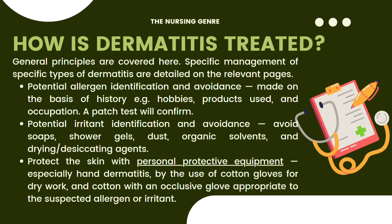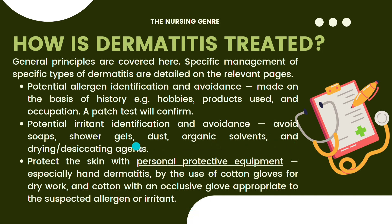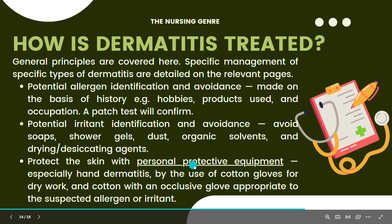How is dermatitis treated? First, potential allergen identification and avoidance — we can confirm allergens via patch tests and avoid them based on history including hobbies, products used, and occupation. Second, potential irritant identification and avoidance — avoid soap, shower gels, dust, organic solvents, and drying agents. We can also protect the skin with personal protective equipment like gloves or goggles.